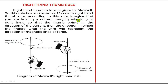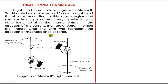According to this rule, imagine that you are holding a current carrying wire in your right hand so that the thumb points in the direction of current. Then the direction in which the fingers wrap the wire will represent the direction of magnetic lines of force, and vice versa.